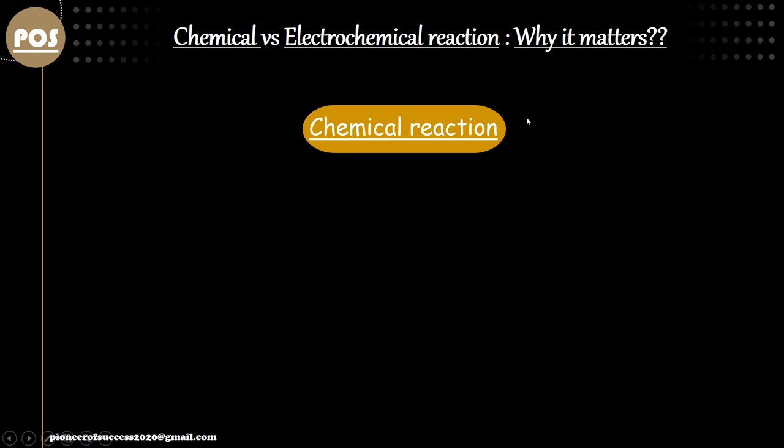Hello friends, welcome to Pioneer of Success. Today we are going to explore a fundamental topic: the differences between a chemical and an electrochemical reaction. In this video we are going to explore what is happening on an electrode surface, or a working electrode surface, when we apply a potential onto it. This video will help you enhance your fundamental knowledge of electrochemistry, and I request you watch the entire video.